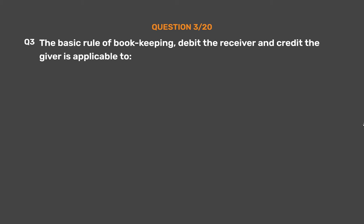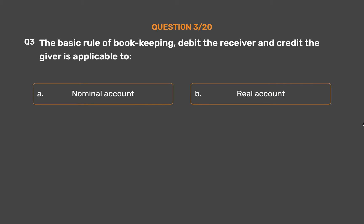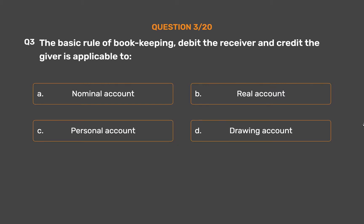Question number three: the basic rule of bookkeeping 'debit the receiver and credit the giver' is applicable to which account? Option A: nominal account. Option B: real account. Option C: personal account. Option D: drawing account.